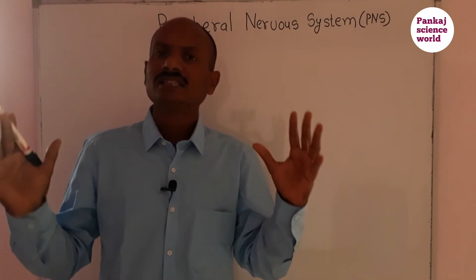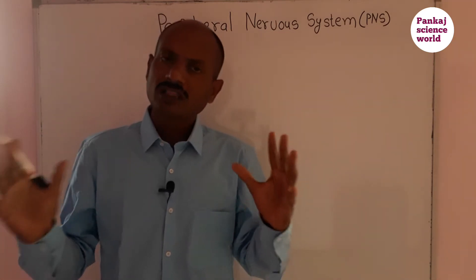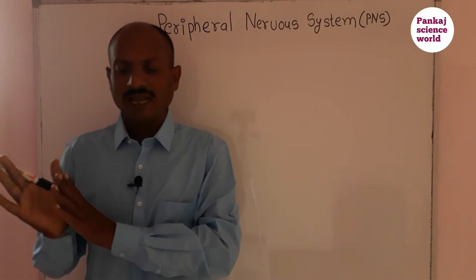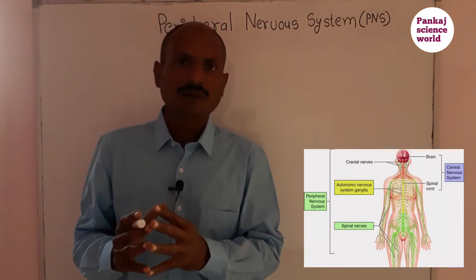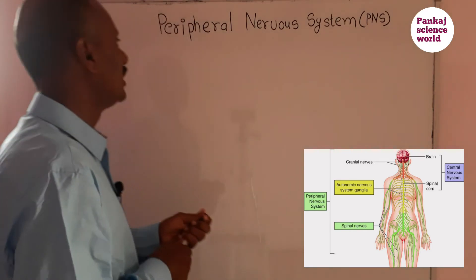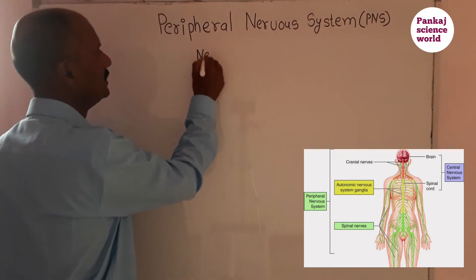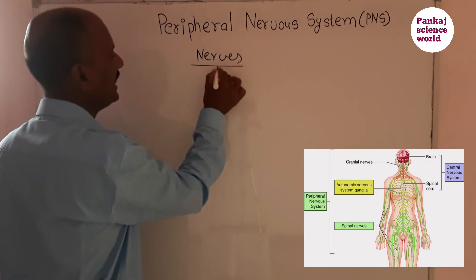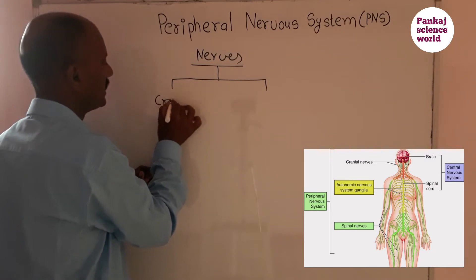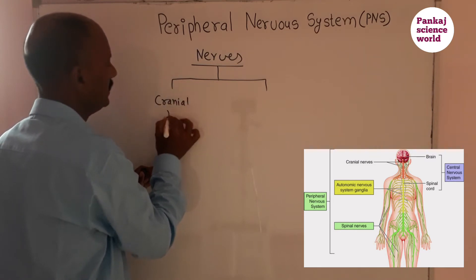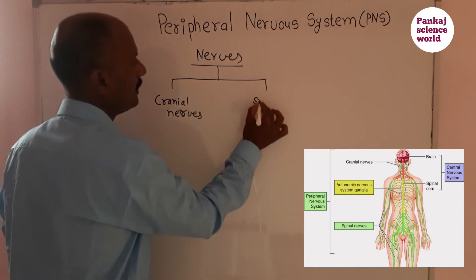All the nerves arising from the brain and spinal cord are connected to the various parts of our body. These nerves are of two types: the cranial nerves and the spinal nerves.